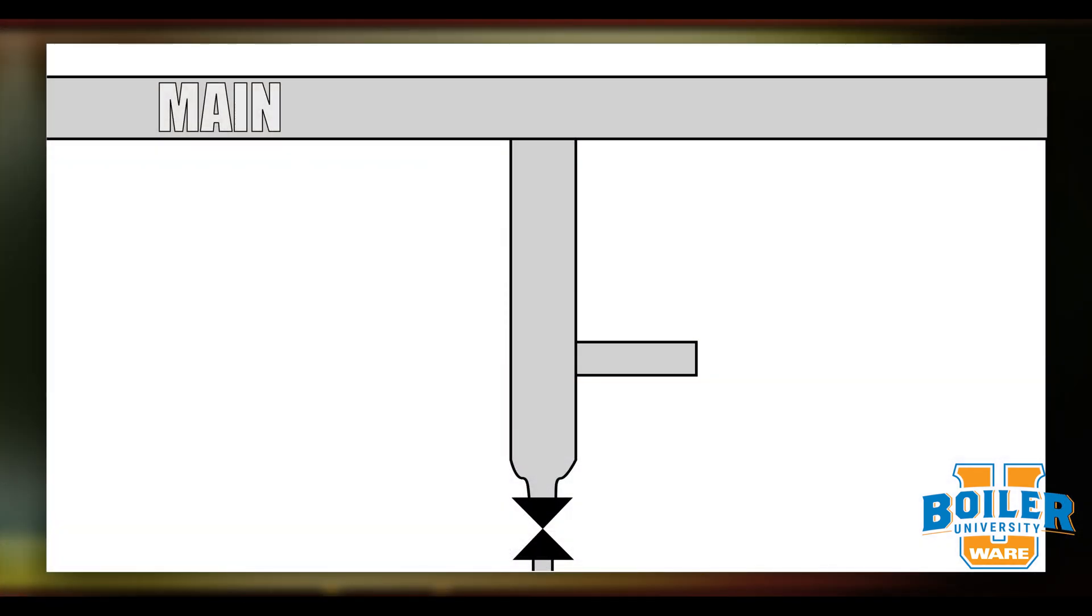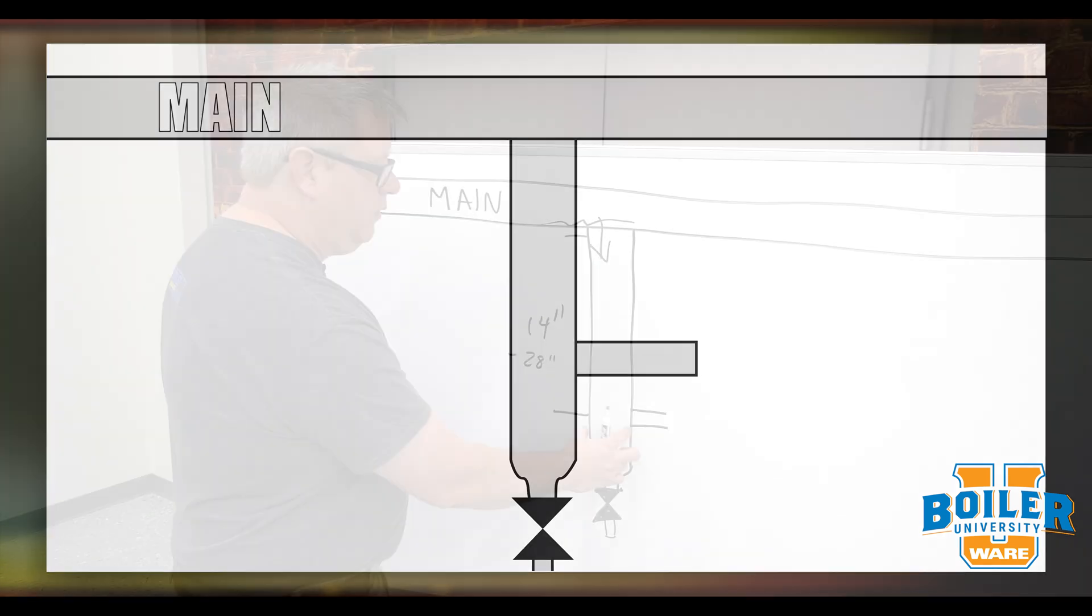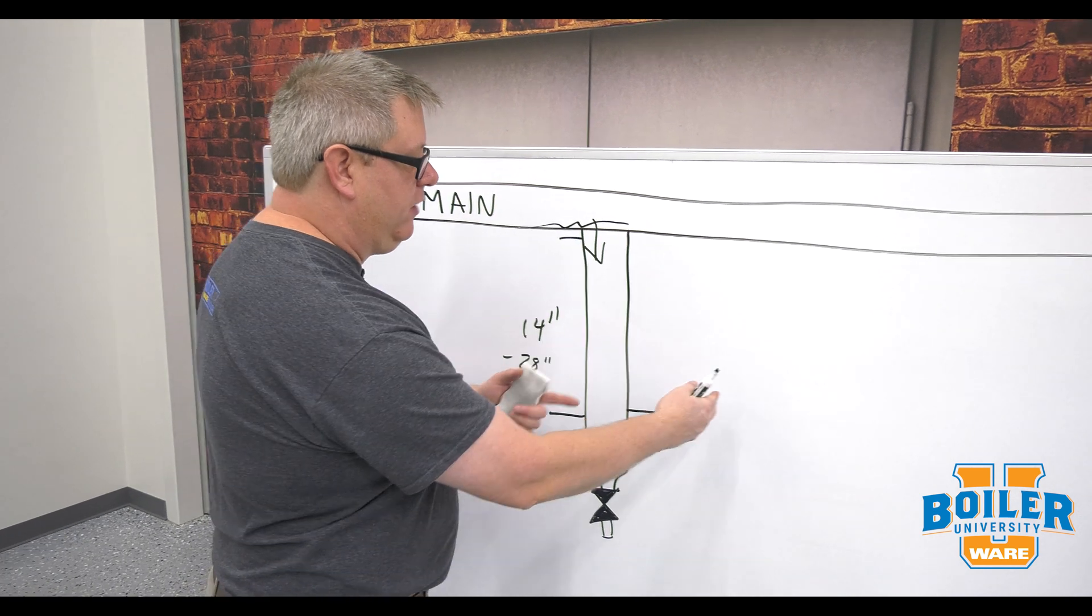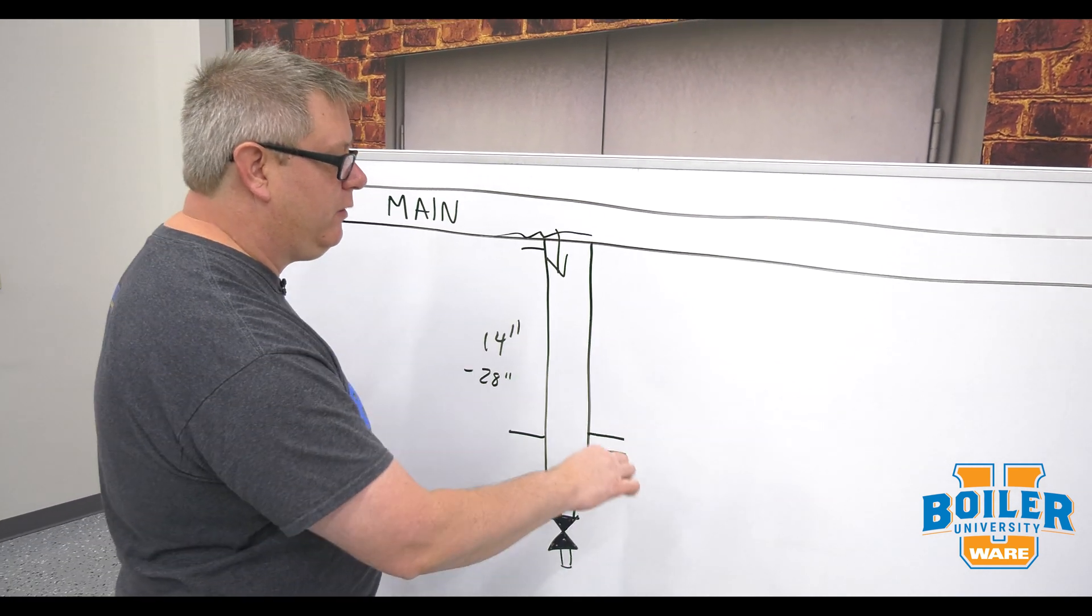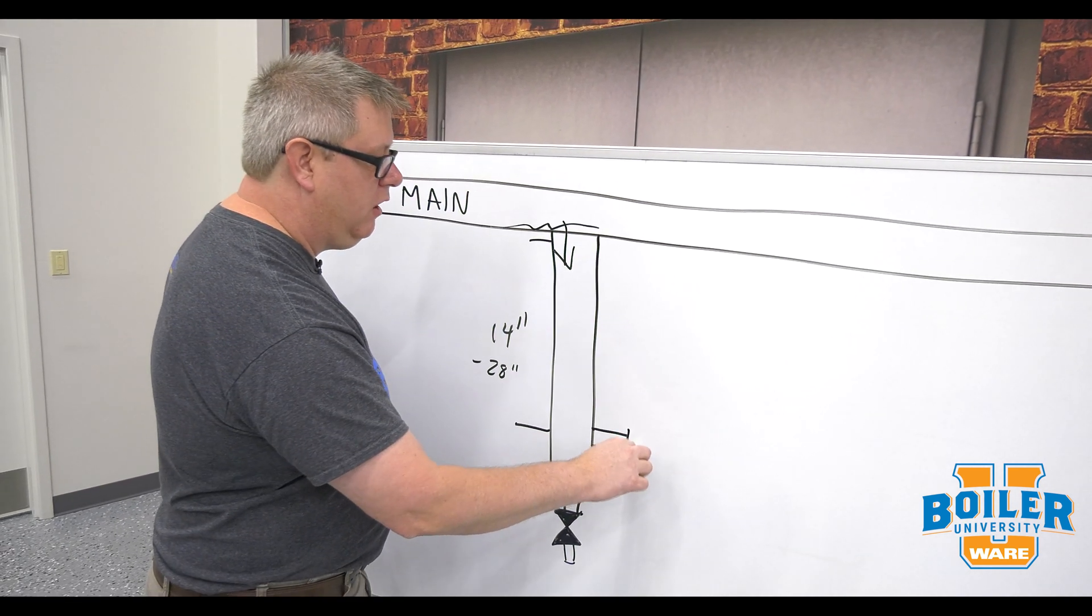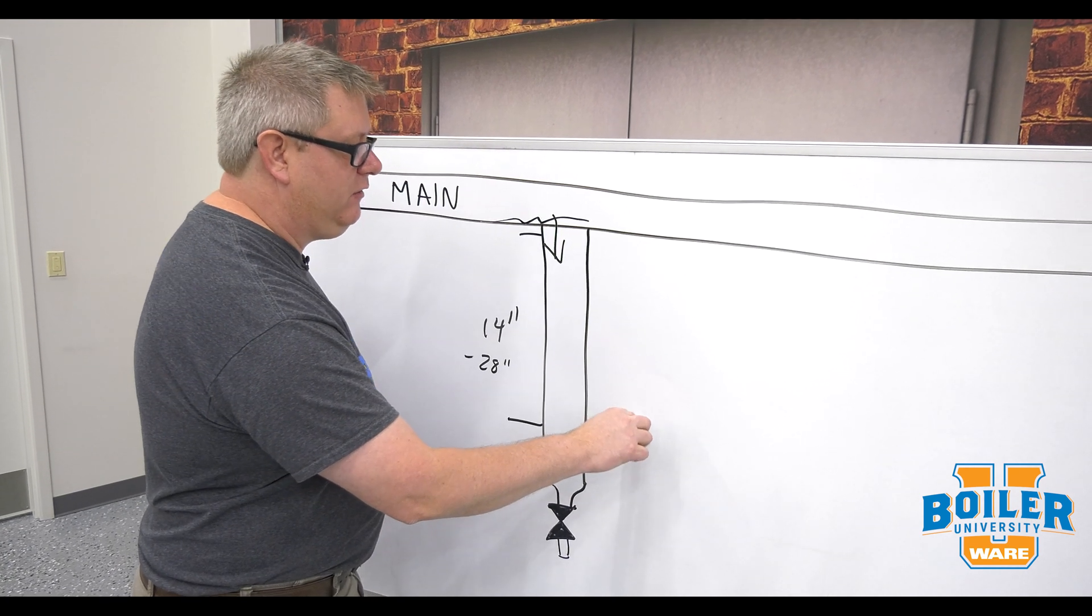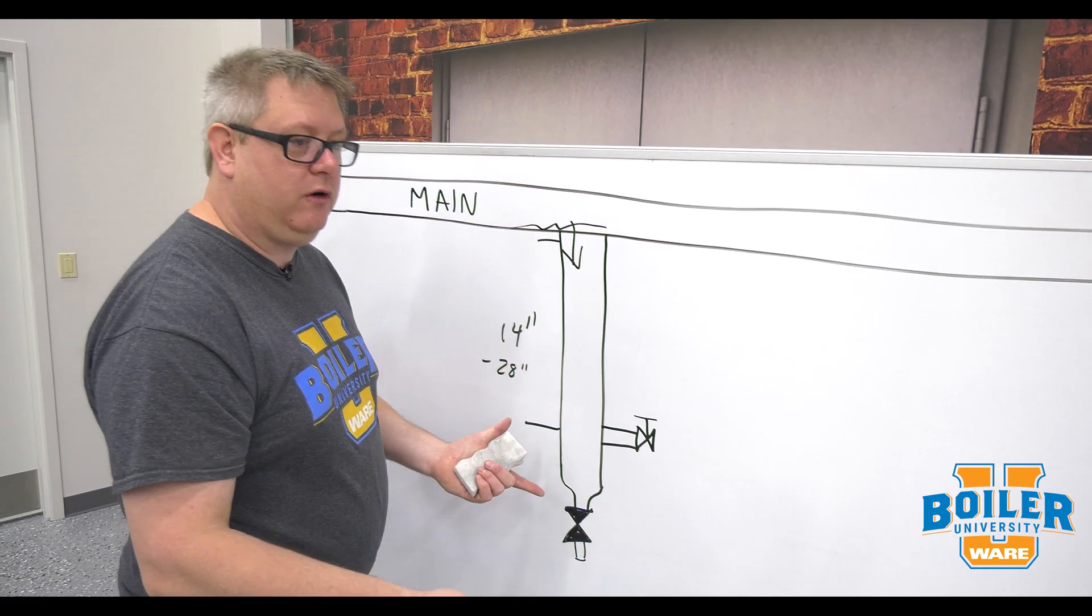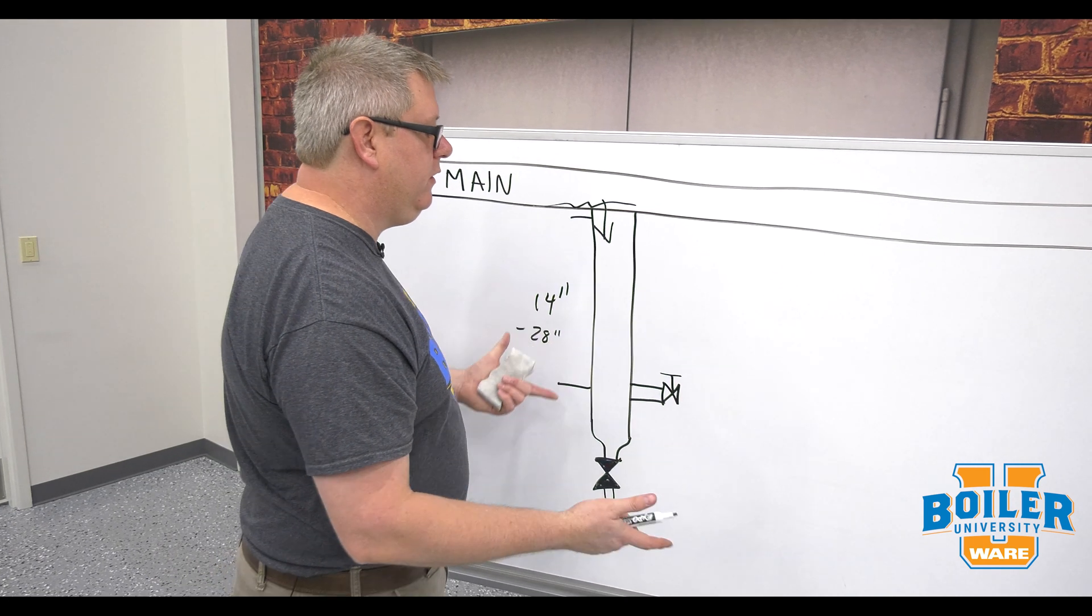So when we come off the side of the drip leg for our trap we want to be off the bottom so we've got a pocket there for dirt so it doesn't go directly into our trap. The first thing we're going to have on that takeoff for our trap is a manual isolation valve and that's so we can service do what we need to with this system.